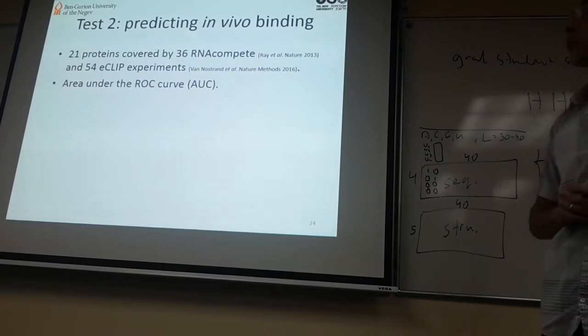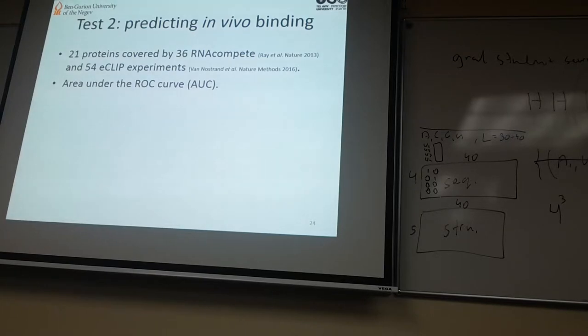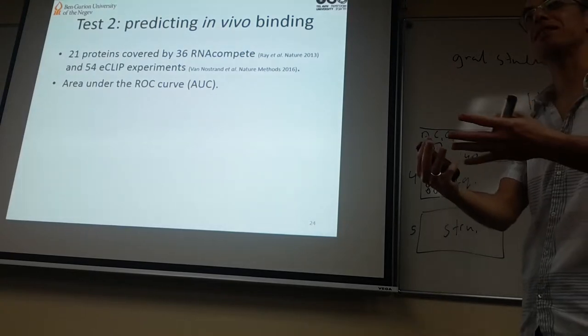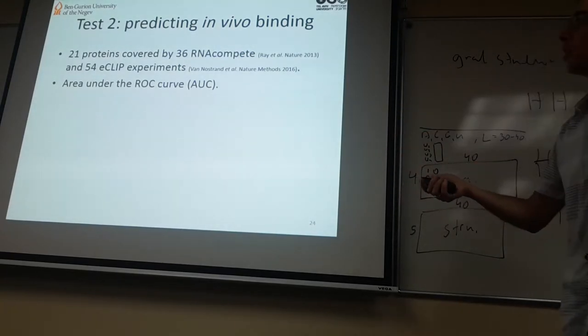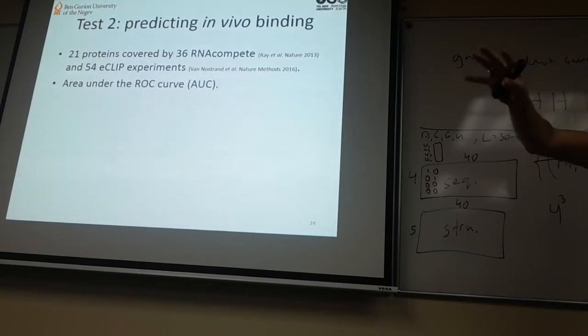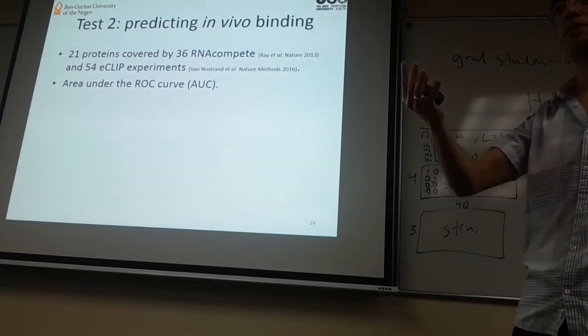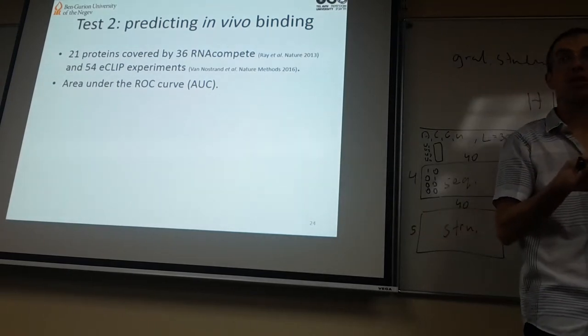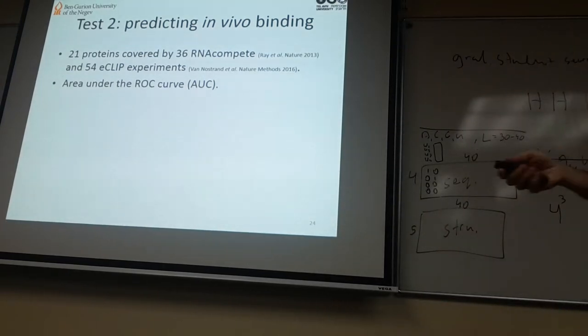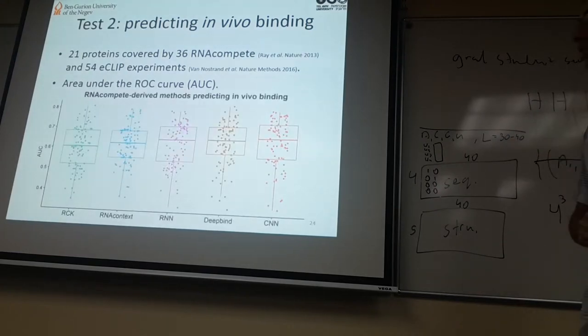Now moving to maybe some people would say is the real test: predicting in vivo binding using our models that were learned and trained on in vitro data, in an experiment done in a tube, to predict what really happens in a cellular environment. Here we used CLIP experiments that give us the classification between bound and unbound RNAs. Our algorithm needs to distinguish between these two sets of positives and negatives. A very common criteria to determine the accuracy is using the area under the ROC curve. This is what we used here. Each experiment has tens of thousands of these sequences, and we used a set of 94 pairs of RNA Compete in vitro data and CLIP in vivo data. Here are the results.